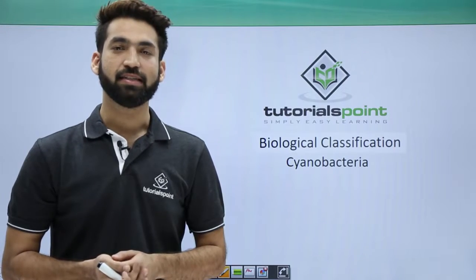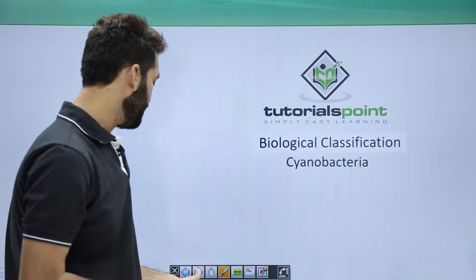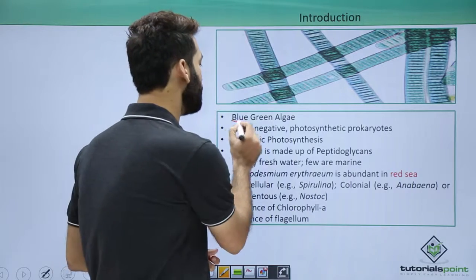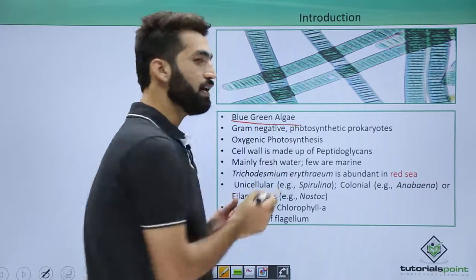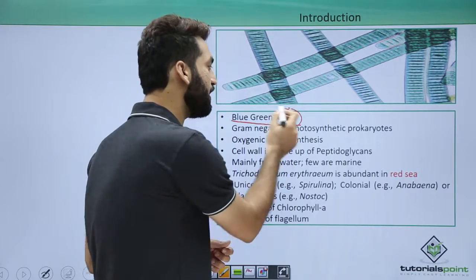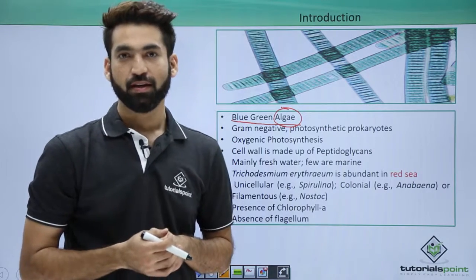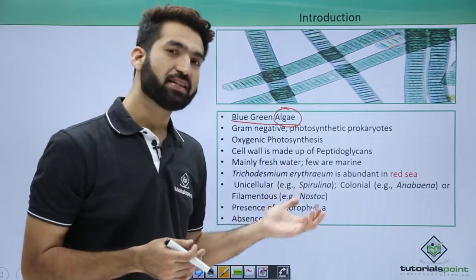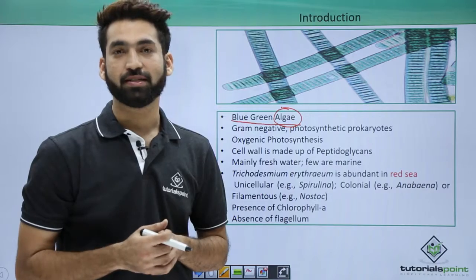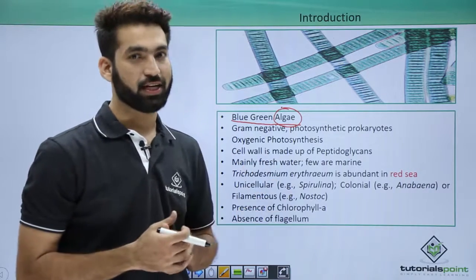In this session we'll be discussing the details about cyanobacteria. Cyanobacteria are also called blue-green algae. Don't confuse with the name 'algae' — algae are members of the plantae kingdom. But cyanobacteria or blue-green algae are not members of the plantae group; they are members of kingdom monera.